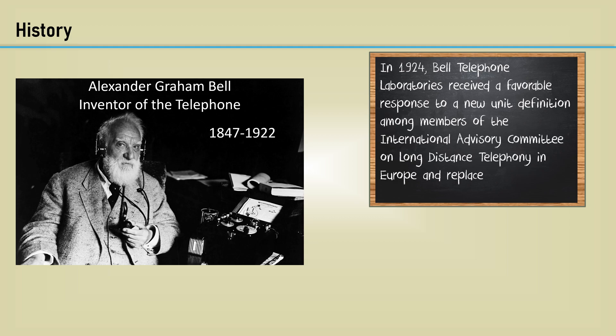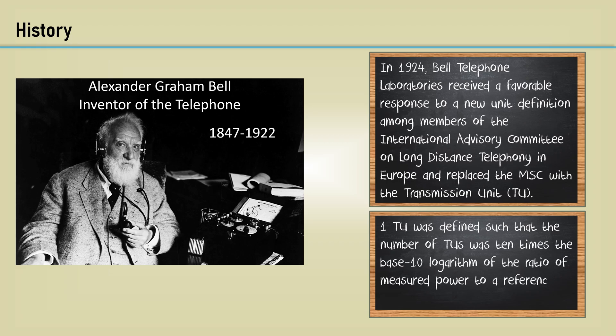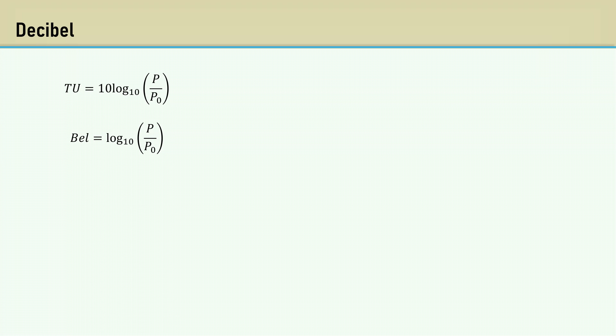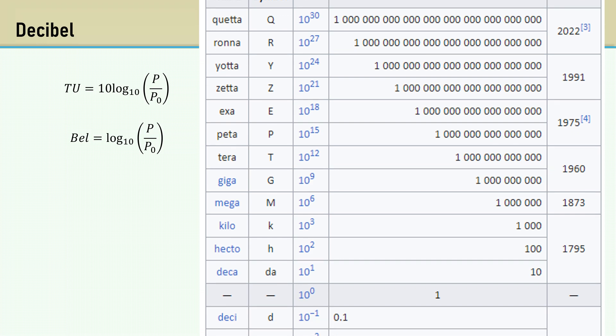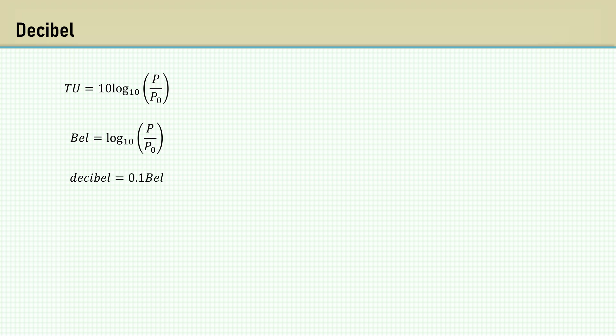In 1924, Bell Telephone Laboratories received a favorable response to a new unit definition among members of the International Advisory Committee on Long-Distance Telephony in Europe and replaced MSC with the transmission unit. TU was defined such that the number of TUs was 10 times the base 10 logarithm of the ratio of measured power to a reference power. The log base 10 of the power ratio was named the Bell after Alexander Graham Bell. From the set of SI prefixes, deci is 0.1. So a decibel is one-tenth of a bell. You must multiply the bell values by 10 just as we would need to multiply a distance by 1,000 if we wanted to use millimeters instead of meters.